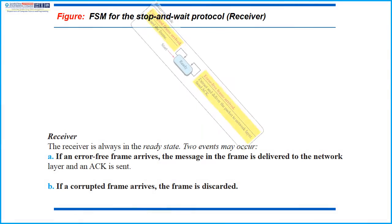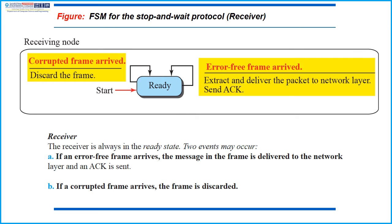Here we see the finite state machine for the stop and wait protocol at the receiver end. The receiver is always in the ready state where two events may occur. If an error-free frame arrives, the message in this frame is delivered to the network layer and an acknowledgement is sent. If a corrupted frame arrives, the frame is discarded.